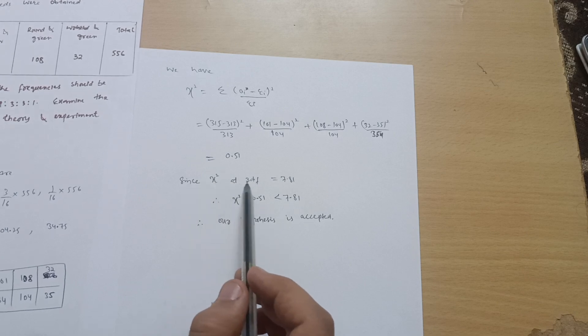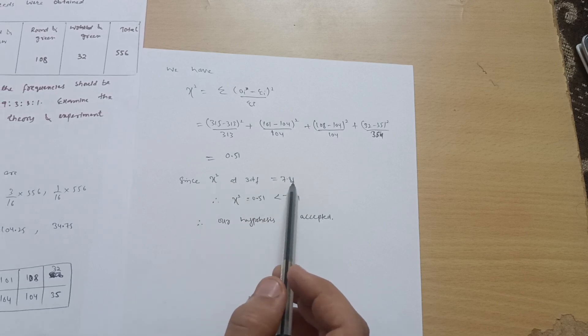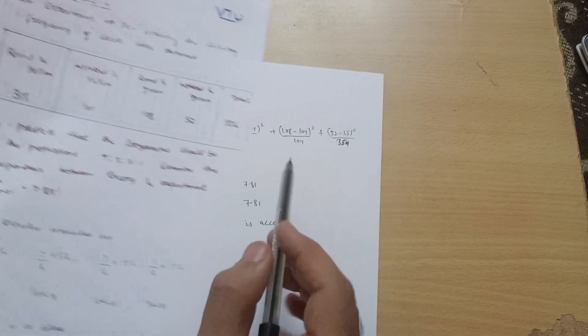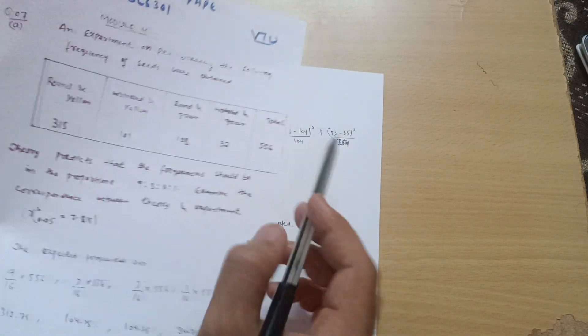So I can write down, since chi-square at three degrees of freedom is equal to 7.815, why three degrees of freedom? You already know these are the varieties: one, two, three, four.